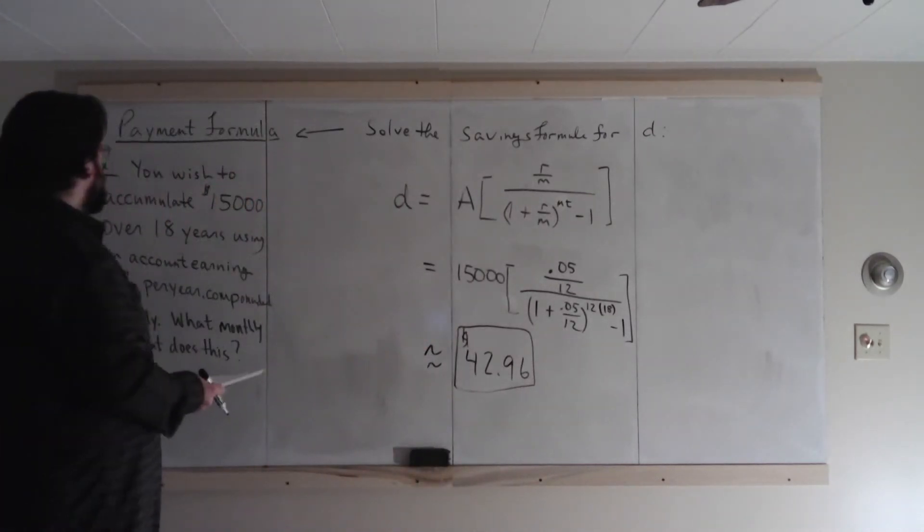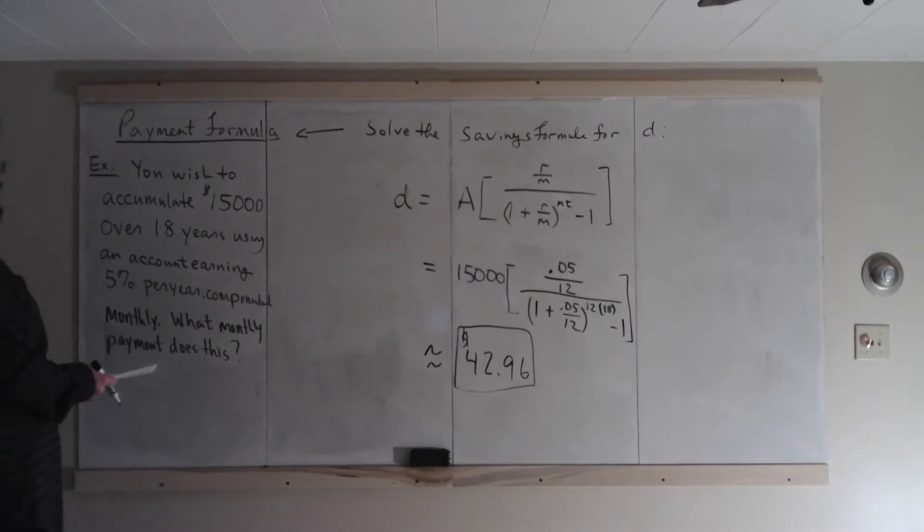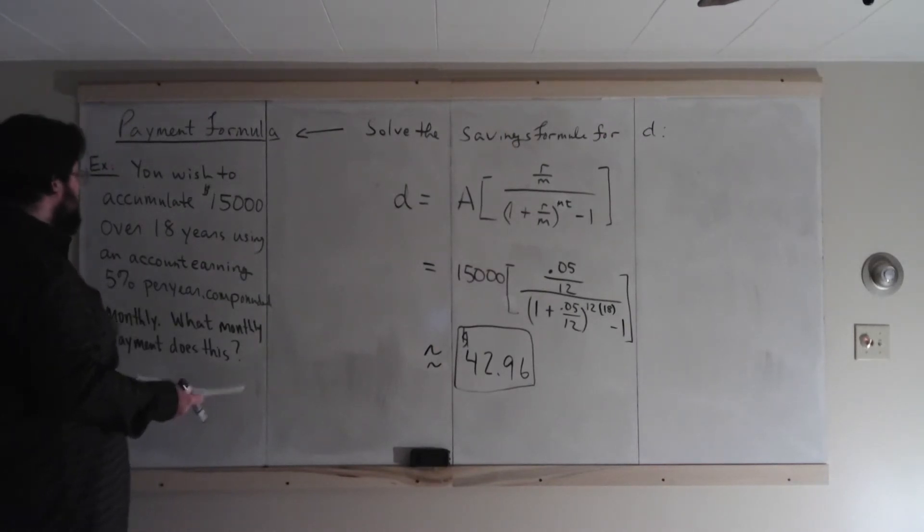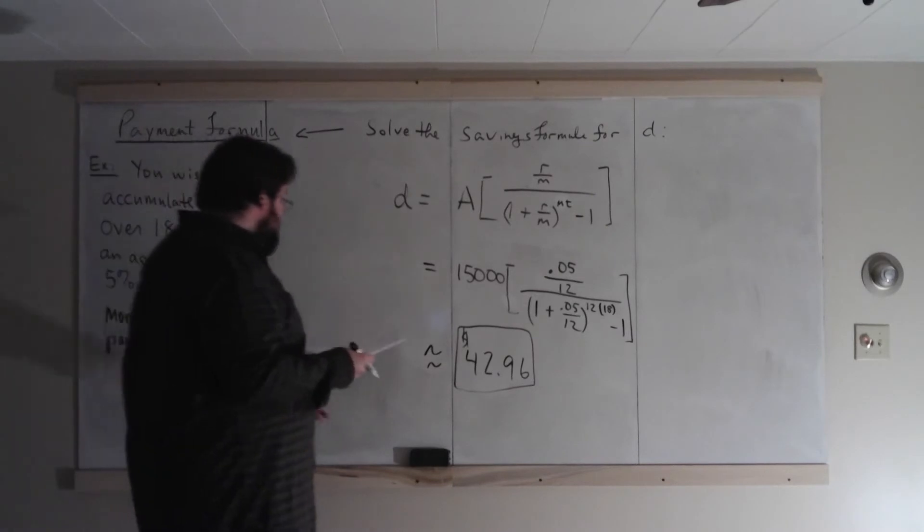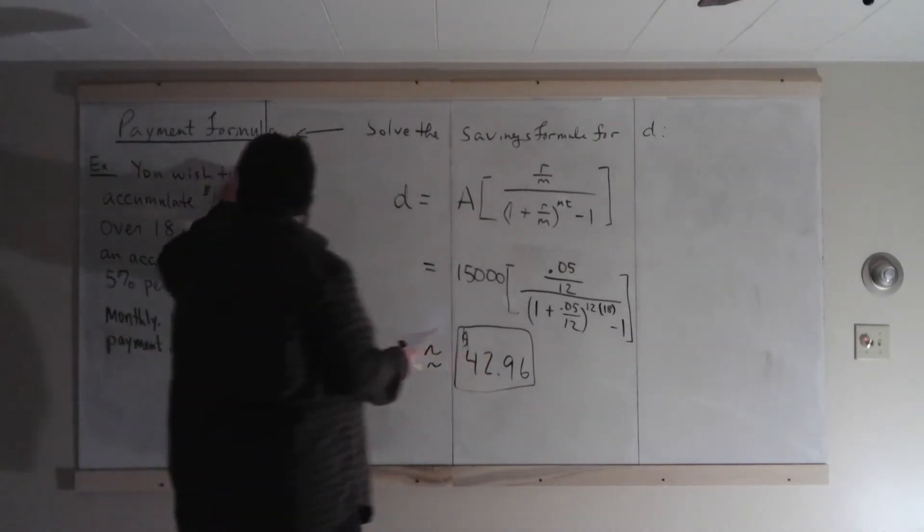This is approximately equal to $42.96. So here, $50 a month in this account, over 18 years, will grow to $15,000. Now, let's look at another example.